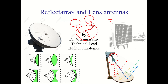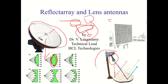The reflectarray concept comes from the parabolic reflector. The evolution started with the parabolic reflector, then the alternative was lens antennas, which also give collimation of beams. Lens antennas are dielectric-based while parabolic reflectors are metal-based. Both are heavy with huge physical size, so then the reflectarray evolved — a printed circuit board-based solution.